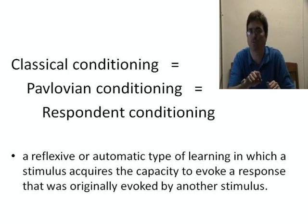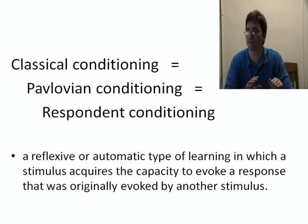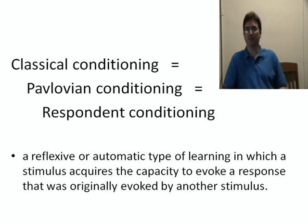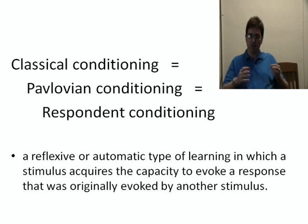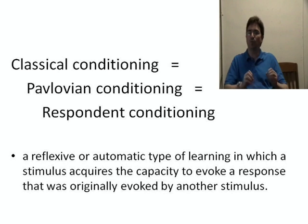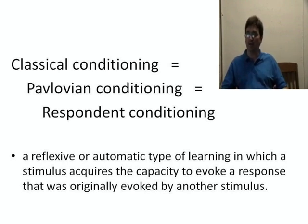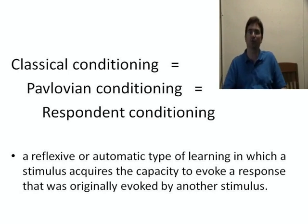All three of these terms mean exactly the same thing. What all three mean is a reflexive or automatic type of learning in which a stimulus acquires the capacity to evoke a response that was originally evoked by another stimulus. In other words, we're going to have you learn to respond to something the way you already responded to something else, and we do that by having those two things occur closely together.